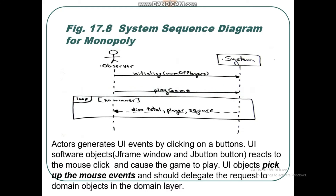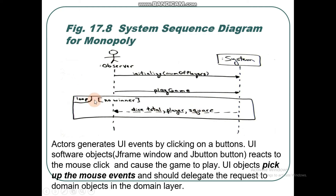The next pattern we are going to start today is the Controller pattern. Let's see an example first to get some idea. This is a system sequence diagram for the Monopoly system. We have already discussed what a system sequence diagram is — messages organized according to time. We have one actor object who initiates a message towards the system, then a play game message, and the response includes dice total, player, and square in a loop until there is a winner.